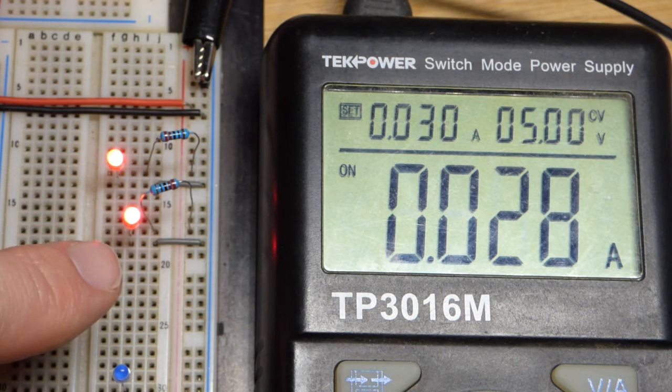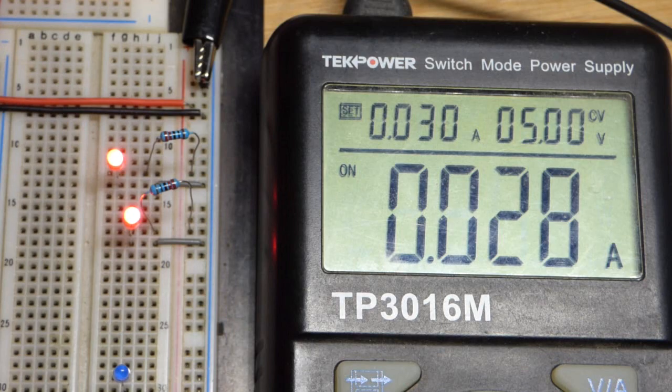One might pass more and then burn out. And then the other one will pass all of the current. That's a possibility.